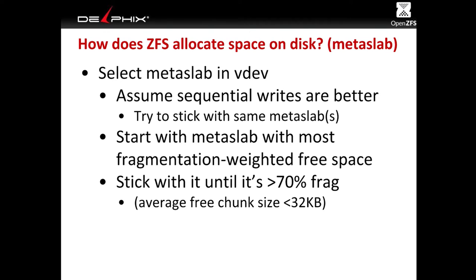The first thing we do is find the best metaslab. The best metaslab is defined as the one with the most fragmentation-weighted free space. It's the metaslab with the most free space, because we assume that will be easiest to allocate from. Fragmentation-weighted means that if two metaslabs have the same amount of free space but one has that space in bigger chunks, we give more weight and prefer to allocate from that metaslab. For example, if one metaslab's free space is in one-meg chunks, that's great; if another has the same amount in one-kilobyte chunks, it'll be much slower to write there.